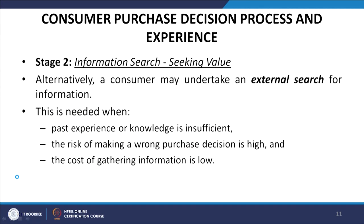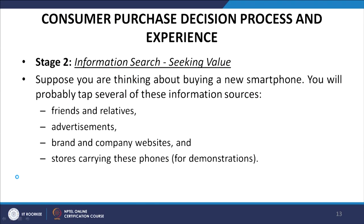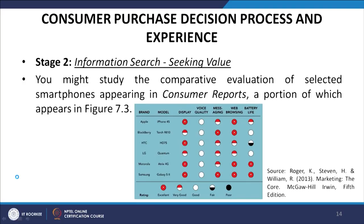For example, when thinking about buying a new smartphone, you would probably use several information sources: calling friends and relatives, looking at advertisements by different brands, viewing brand and company websites, and visiting stores for a product demonstration. You might also study comparative evaluations of selected smartphones, such as those appearing in Consumer Reports, as shown in figure 7.3.